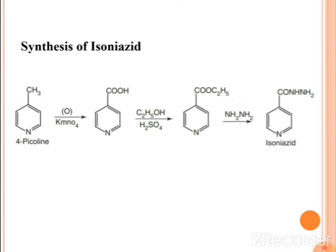The synthesis of isoniazide is also asked in examinations. The starting material is 4-picoline — pyridine with a CH3 group. Oxidation of 4-picoline gives the COOH group; treatment with alcohol (C2H5OH) and H2SO4 forms the ester intermediate. This intermediate is then treated with hydrazine (NH2NH2) to give isoniazide. This is the basic synthesis of isoniazide.